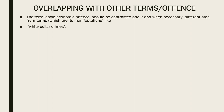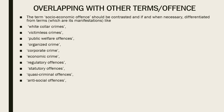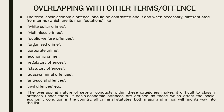Socioeconomic offenses are often confused with other offenses like white-collar crime, victimless crime, public welfare offenses, organized crime, corporate crimes, economic offenses, regulatory offenses, statutory offenses, quasi-criminal offenses, anti-social offenses, and civil offenses. The overlapping nature of several conducts within these categories makes it difficult to classify offenses. If socioeconomic offenses are defined as those which affect the socioeconomic condition of the country, all criminal statutes both major and minor will find their way into the list, but there is still a difference. The detailed discrimination between these will be described in other videos.